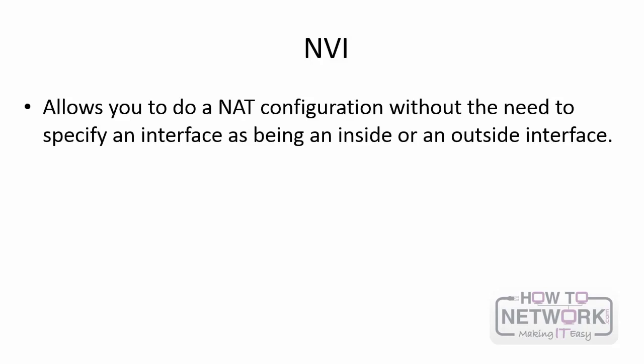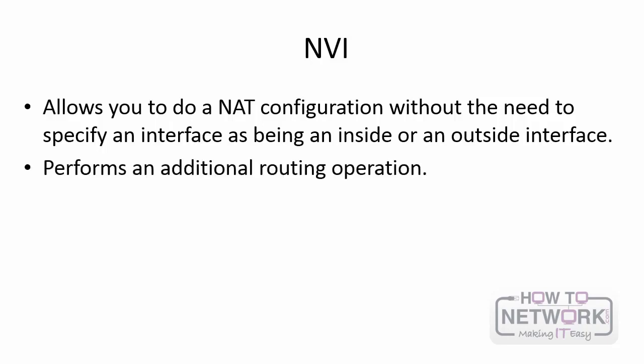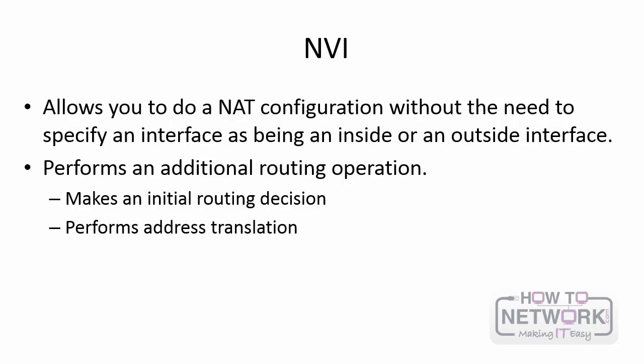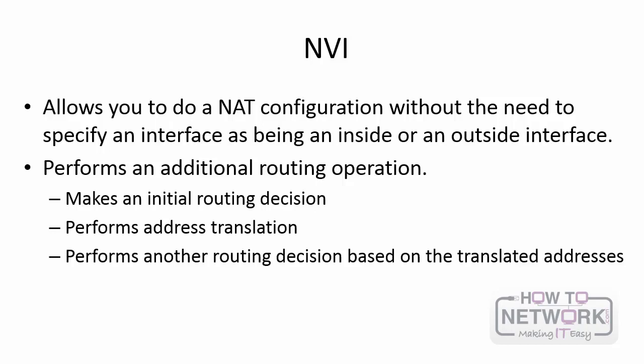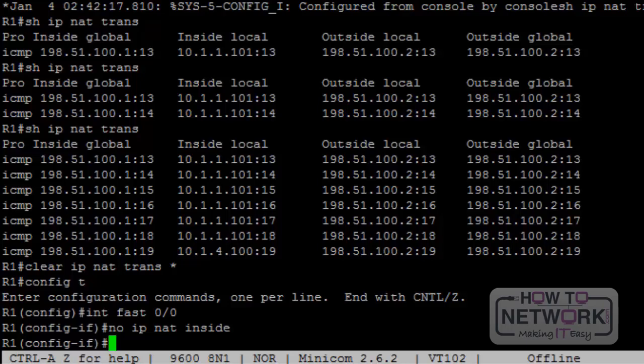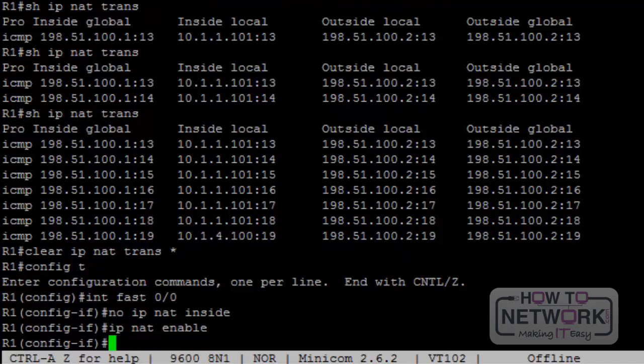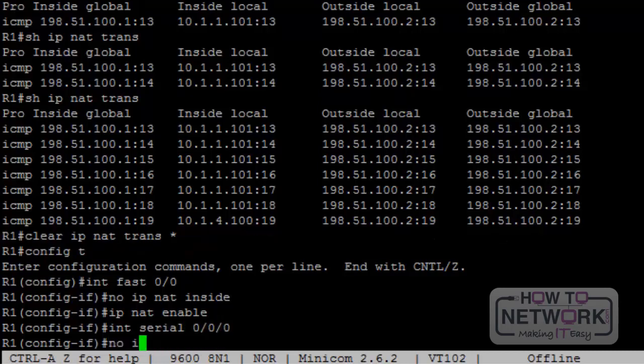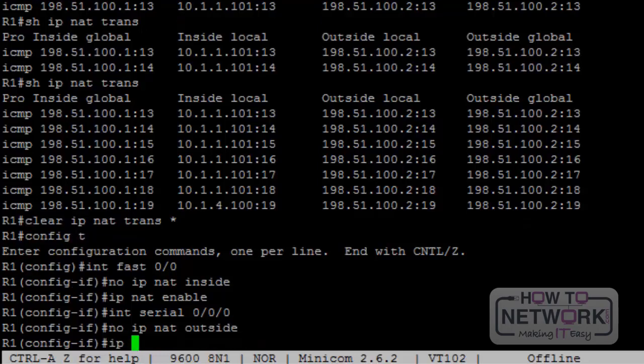Next, let's look at NAT Virtual Interface. NVI allows you to do a NAT configuration without needing to specify a specific interface as inside or outside. It performs an additional routing operation: first an initial routing decision, then address translation, then another routing decision based on the translated address. To enable NVI, you remove 'ip nat inside' or 'ip nat outside' from the interface and simply type 'ip nat enable'. That's what Cisco wants you to know for the exam.